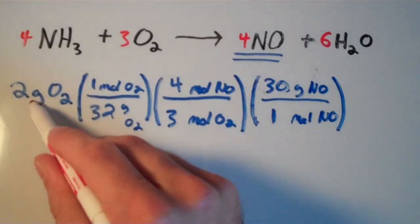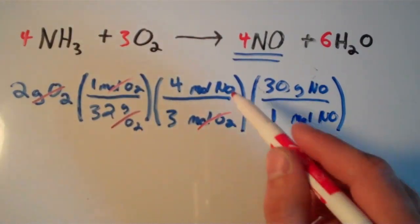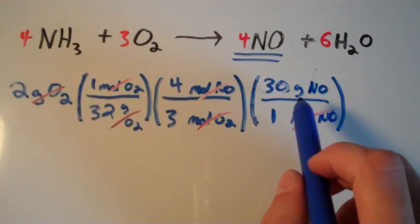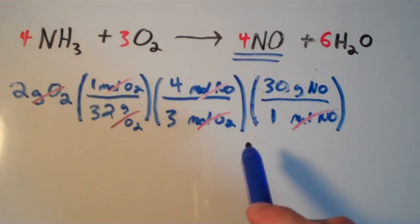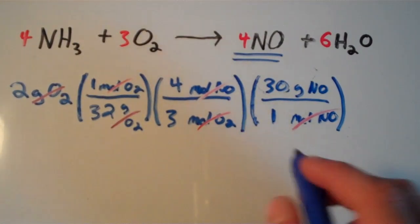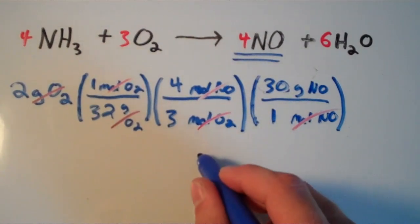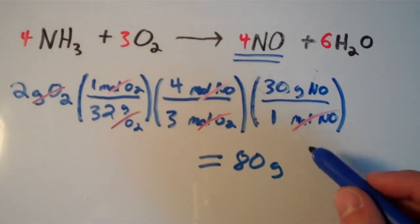It looks like grams of O2 cancels with grams of O2, moles of O2 cancels here, moles of NO cancels here, and we're left with grams of NO. So 30 times 4 is 120, 120 times 2 is 240, and 240 divided by 3 is 80. This would be 80 grams of NO.